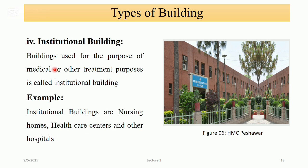Institutional buildings: buildings which are used for the purpose of medical or other treatment are called institutional buildings. Examples of institutional buildings are nursing homes, healthcare centers, and hospitals. You can see in the figure a medical complex.